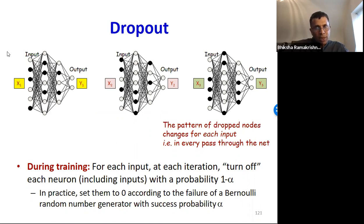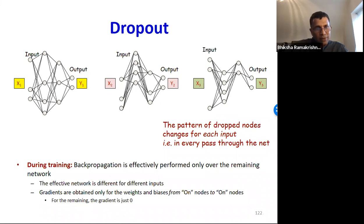For instance here, for each of these three inputs x1, x2 and x3, we are switching off different portions of the network. So each of these inputs effectively sees a different network. Even for the same input, we will have different switch-off patterns in different iterations so that that input sees different effective networks in each iteration.